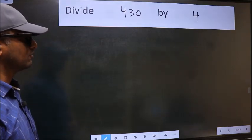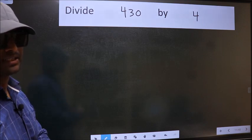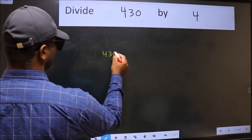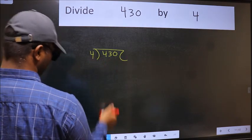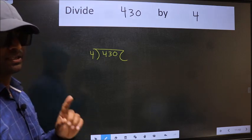Divide 430 by 4. To do this division, we should frame it in this way. 430 here and 4 here. This is your step 1.